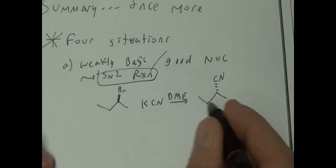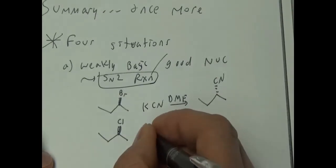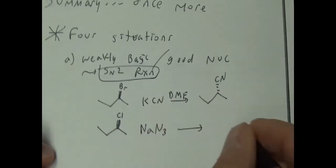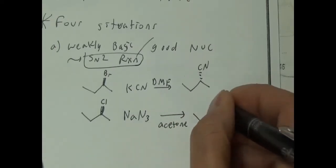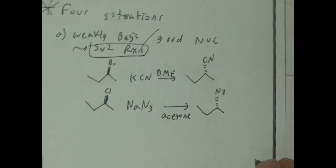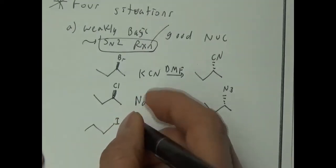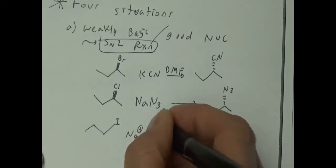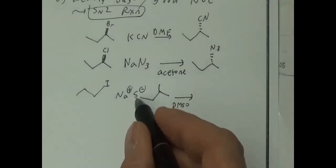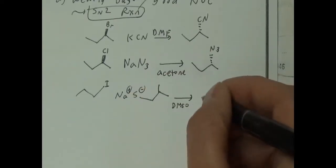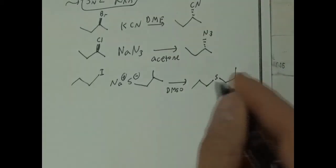Good nucleophiles like azide and sulfur anions work really well on secondary and primary substrates with good leaving groups. Sulfur things with negative charges are good nucleophiles. For example, using a primary bromide with a sodium sulfide-type nucleophile gives a sulfide functional group. Selenium is also a good nucleophile — sulfur and selenium are polarizable because they're lower on the periodic table.